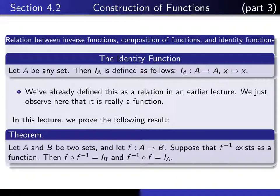If A and B are any two sets, and f is a function from A to B, and if we know that f inverse exists as a function, so it would be a function from B to A, then when you take the composition in the order f inverse composed with f, you get the identity on B, and if you take it in the opposite order, you get the identity on A.